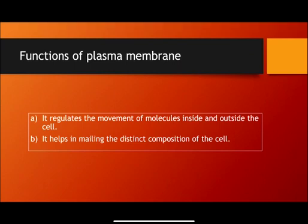Functions of the plasma membrane: it regulates the movement of molecules inside and outside the cell. It helps in maintaining the distinct composition of the cell. Its main function is to let molecules pass inside and outside the cell.